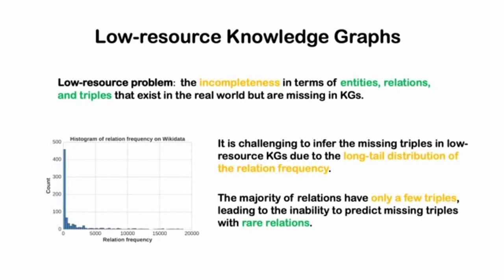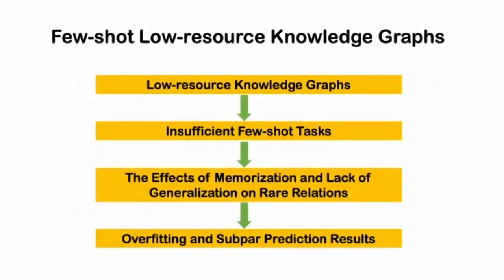Current few-shot solutions require sufficient few-shot tasks to mitigate the effects of memorization and improve generalization to rare relations. However, low-resource knowledge graphs do not always have adequate few-shot tasks for training the few-shot model, leading to overfitting and yielding subpar prediction results.